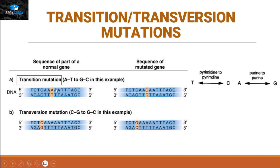In this picture, as you can see, adenine will get replaced by guanine. Now adenine is a purine and guanine is also a purine, so it will fall under the category of transition mutation.